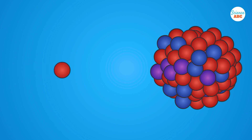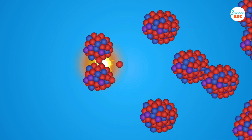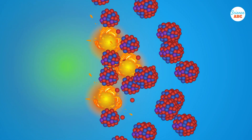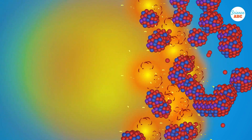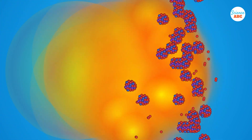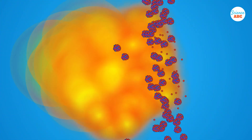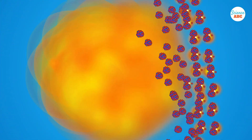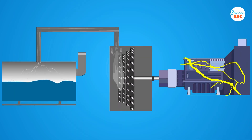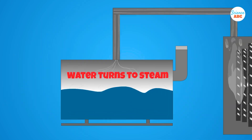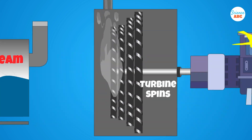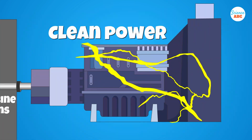The collision of the neutron with the atom can also produce additional neutrons, which can then collide with more atoms, starting a chain reaction and releasing an enormous amount of energy. The energy thus released heats water into steam, which in turn spins a turbine to produce clean power.